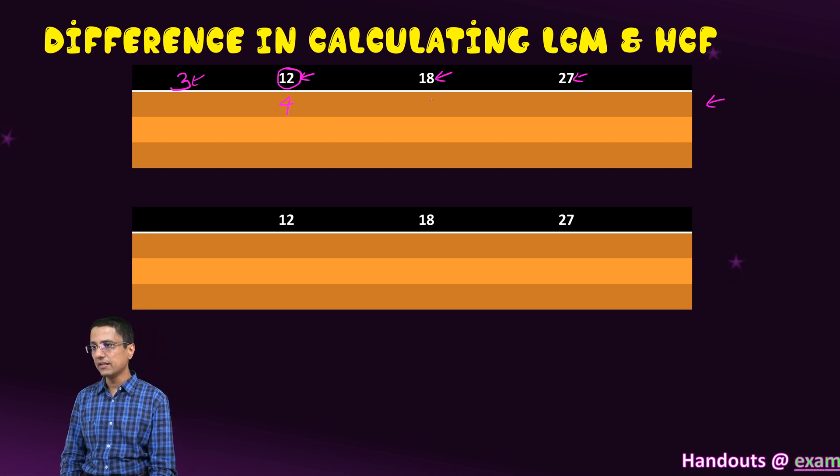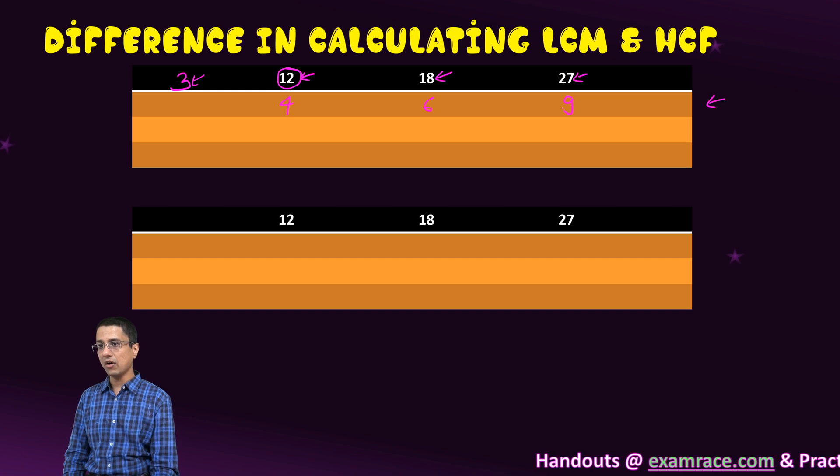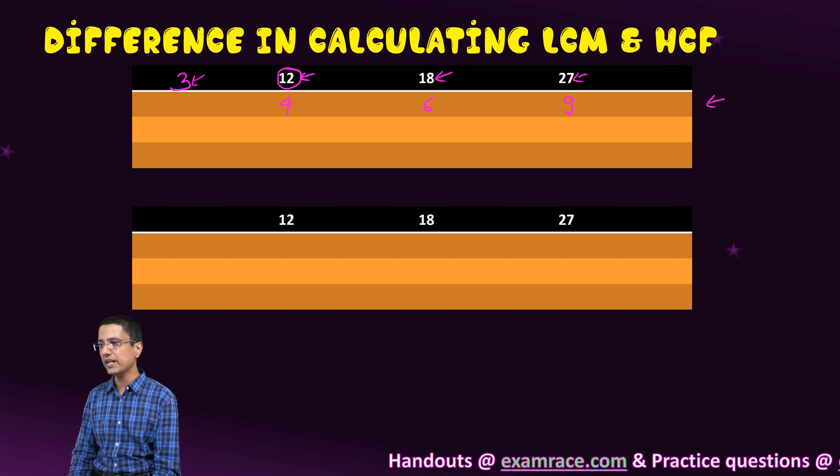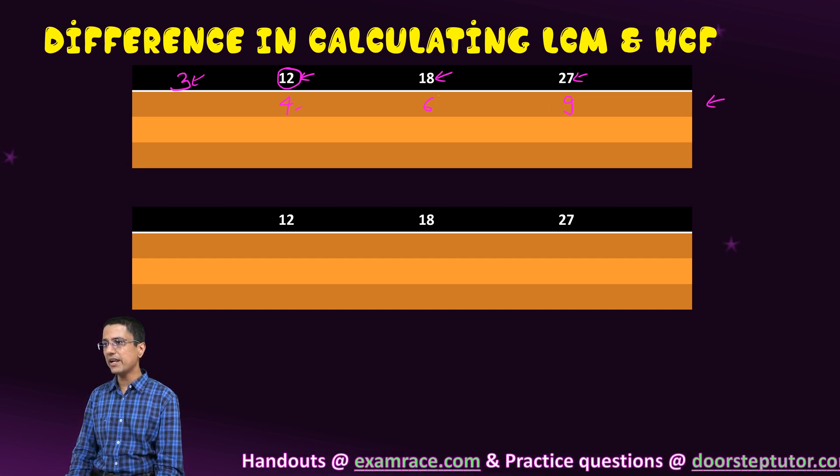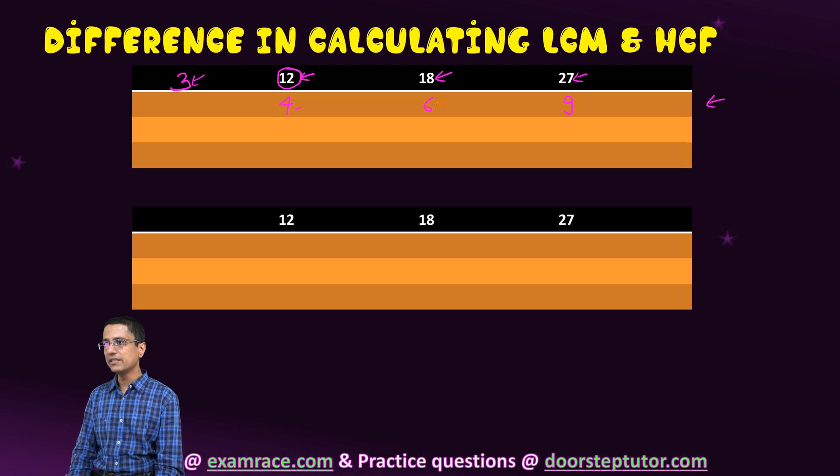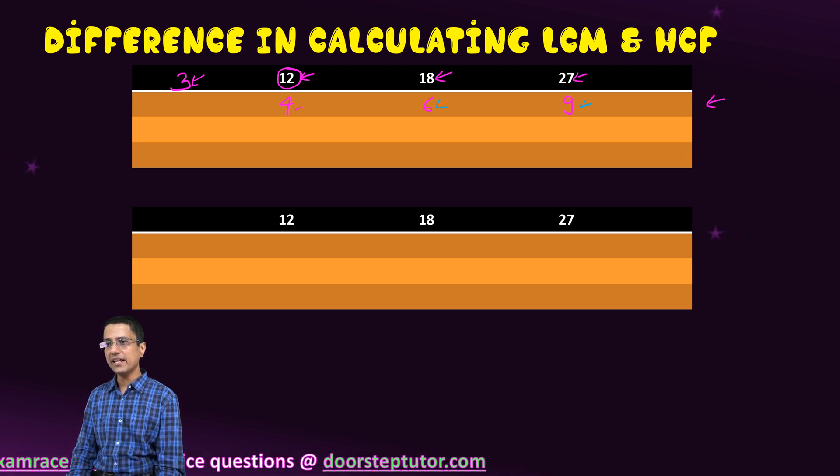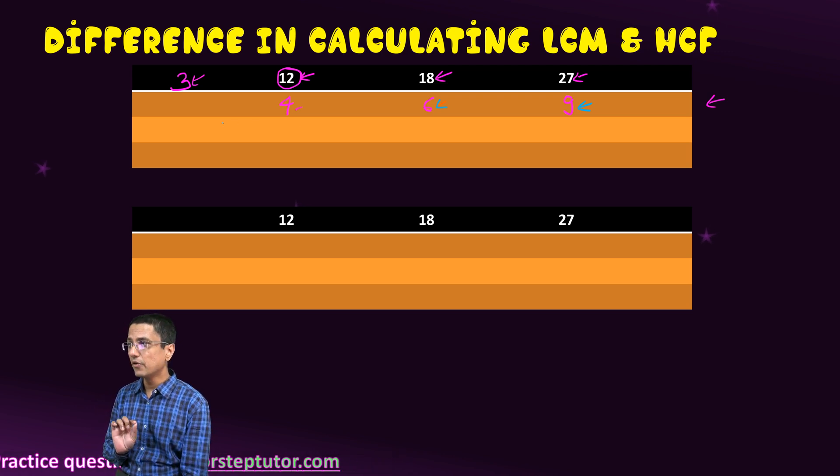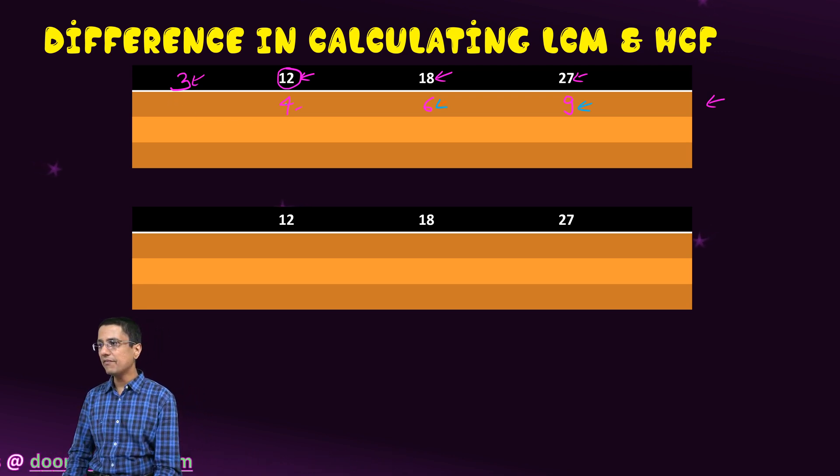So it has to divide 12 and all of them. It has to divide 12, so we get an answer of 4, and then it has to divide 18 and we get an answer of 6, and it has to divide 27 and we get an answer of 9. So 3 would be that number.